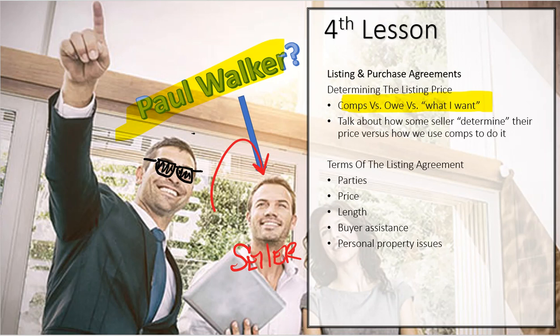So the second way you could potentially determine the list price is where the agent says, what do I want? I want a million dollars. So there are three different ways to determine the list price.